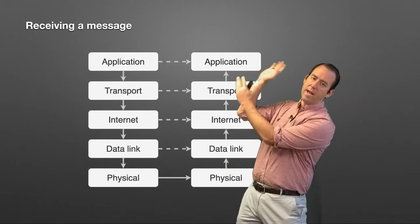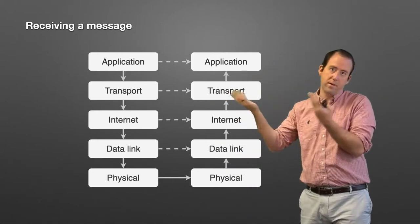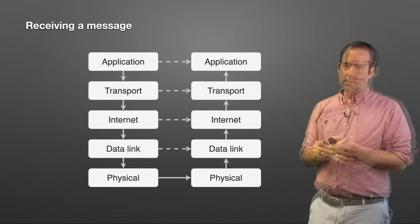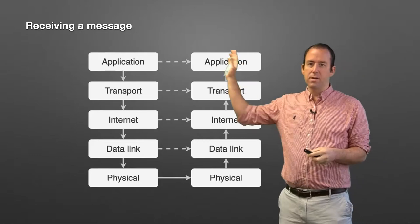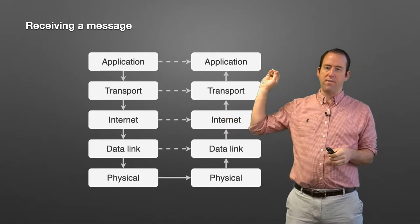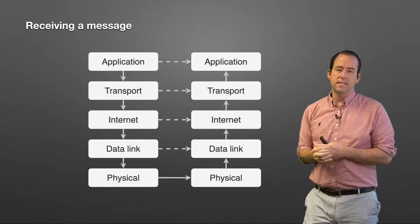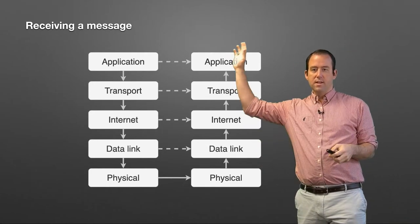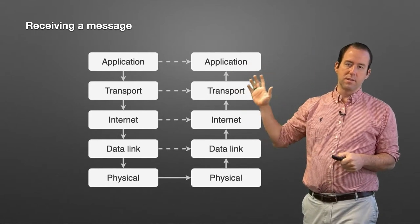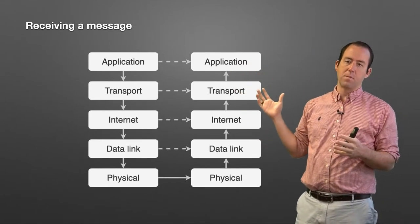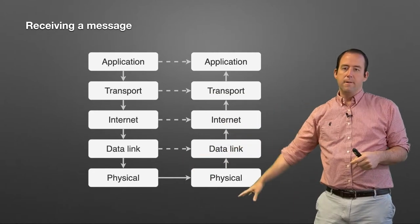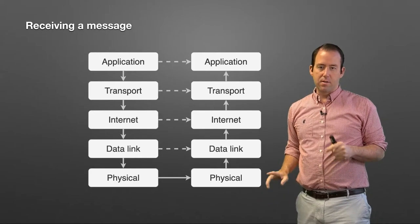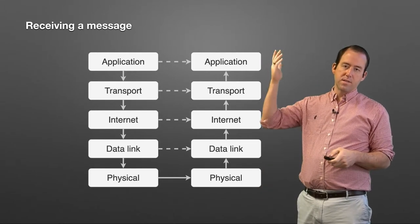When messages go back the other way, the exact same thing happens in reverse. We can make this network more complicated — instead of just two devices, let's say we need to send a message across the country through some routers. This simpler model is essentially how a local area network works: the application layer goes down to the physical layer, bits travel across the network as voltages or Wi-Fi signals, and on the same network the physical layer goes back up the stack.